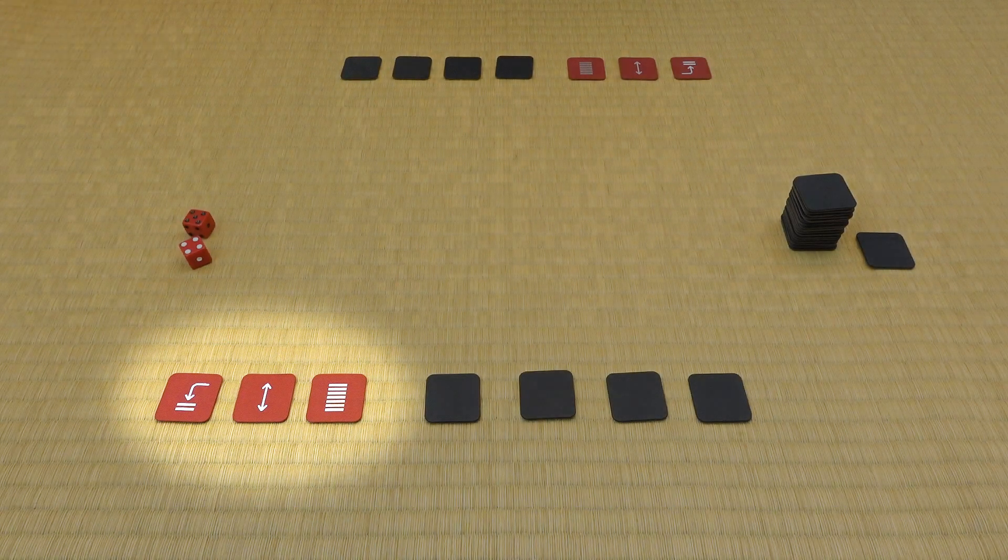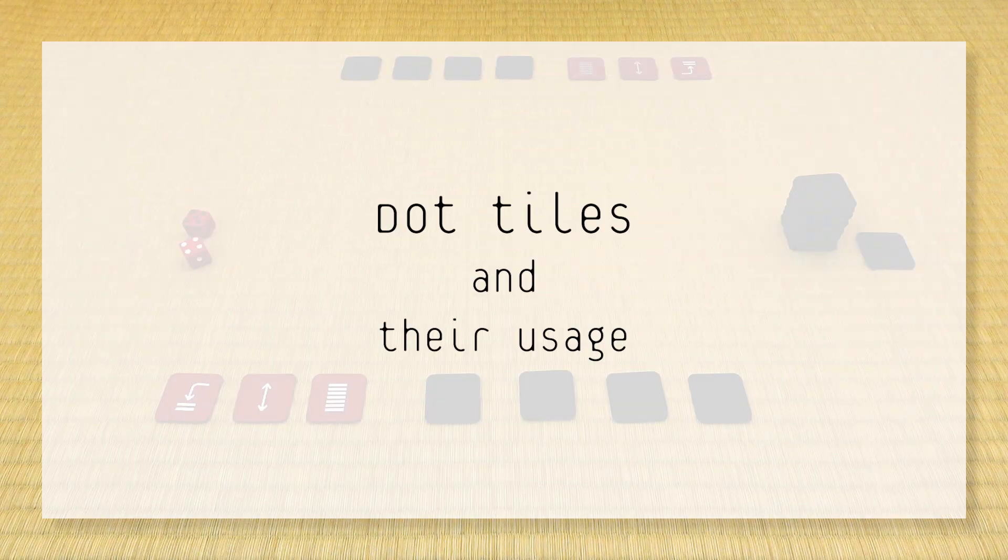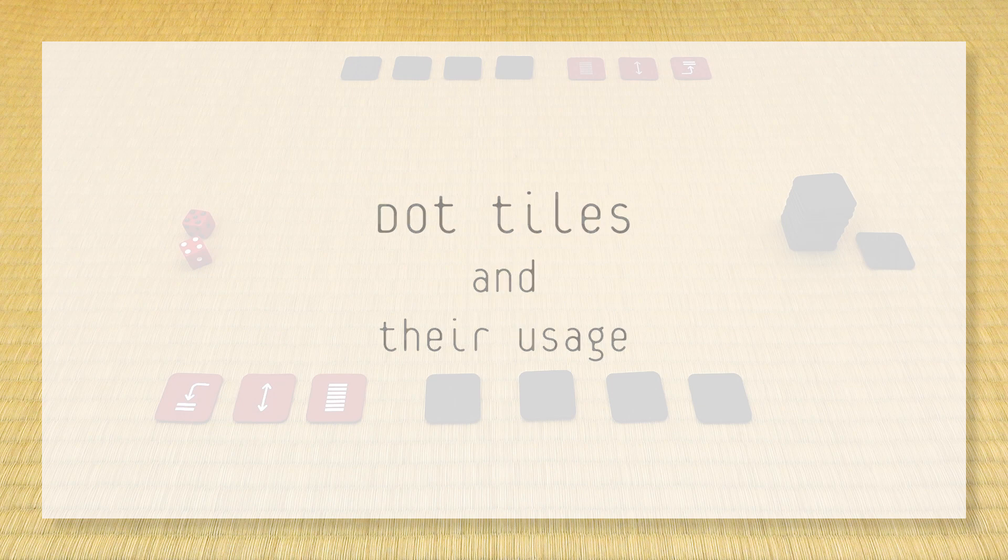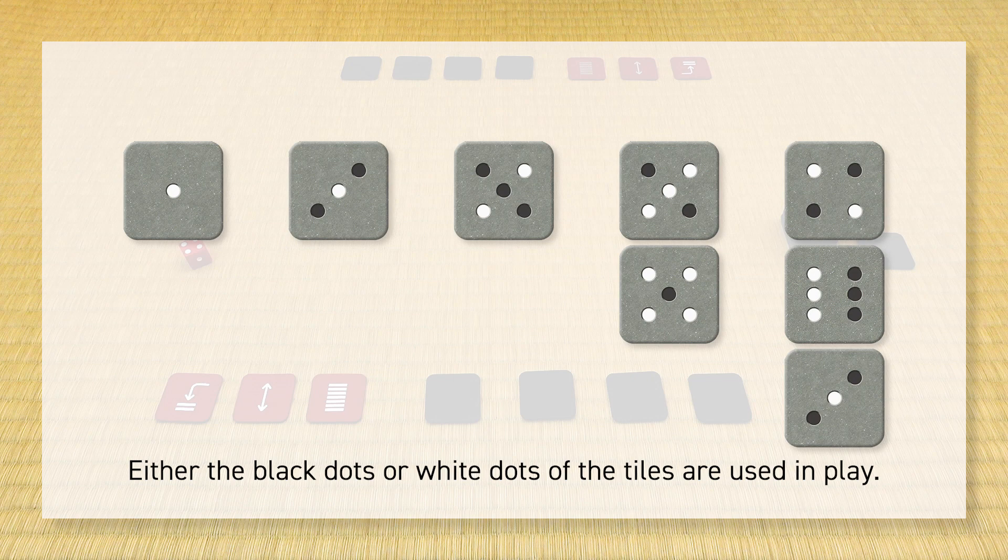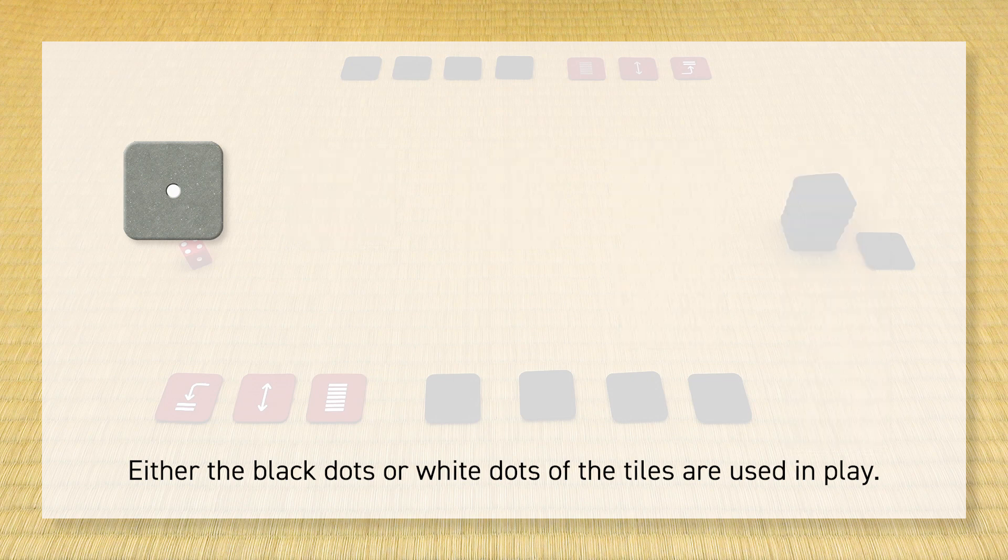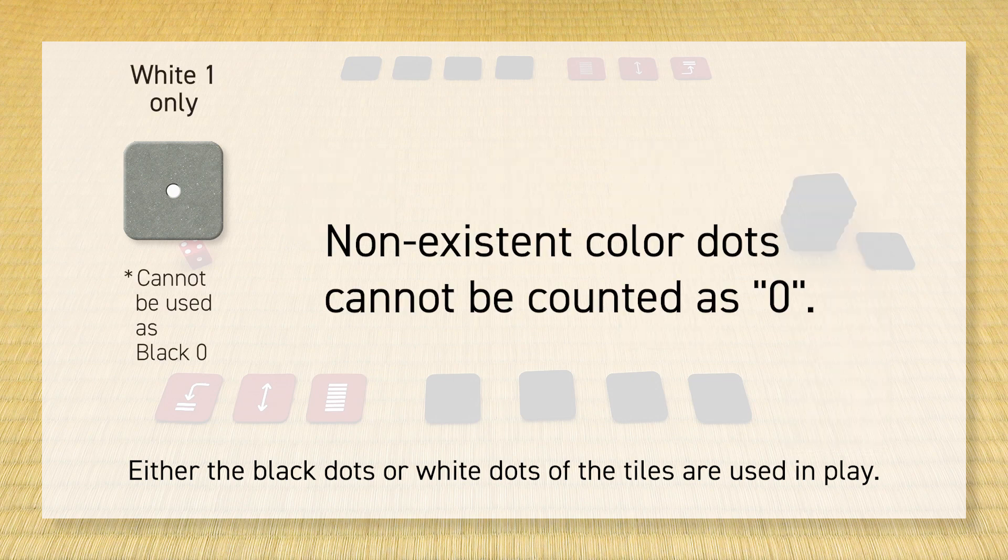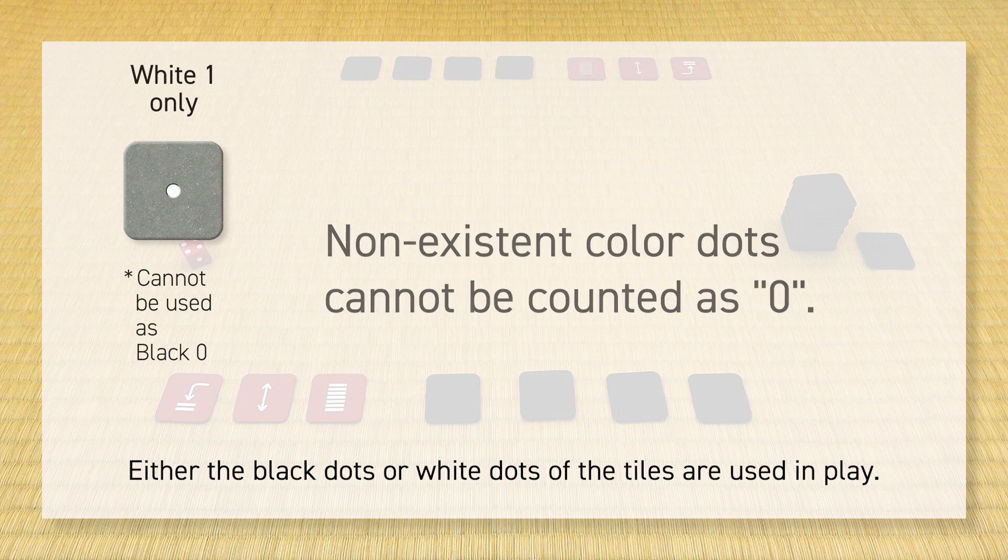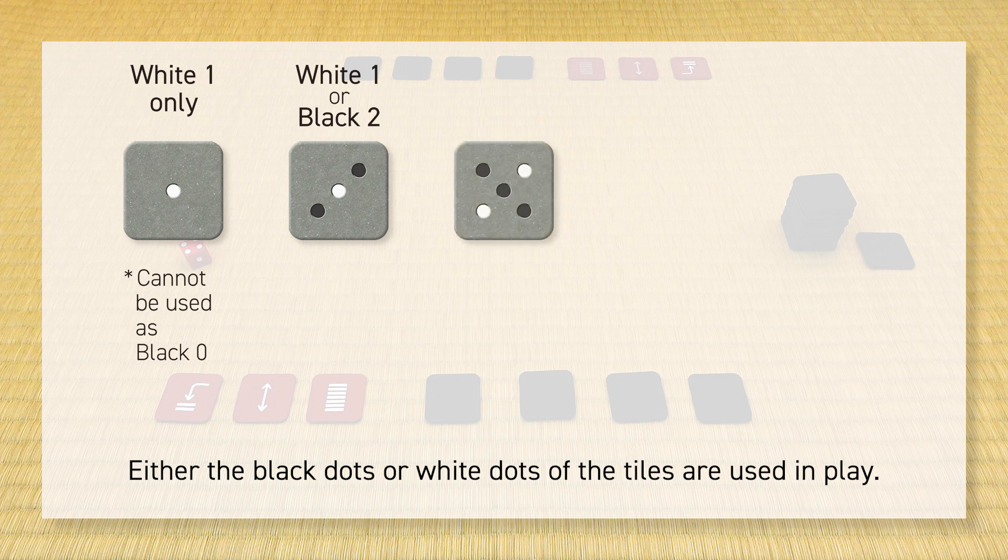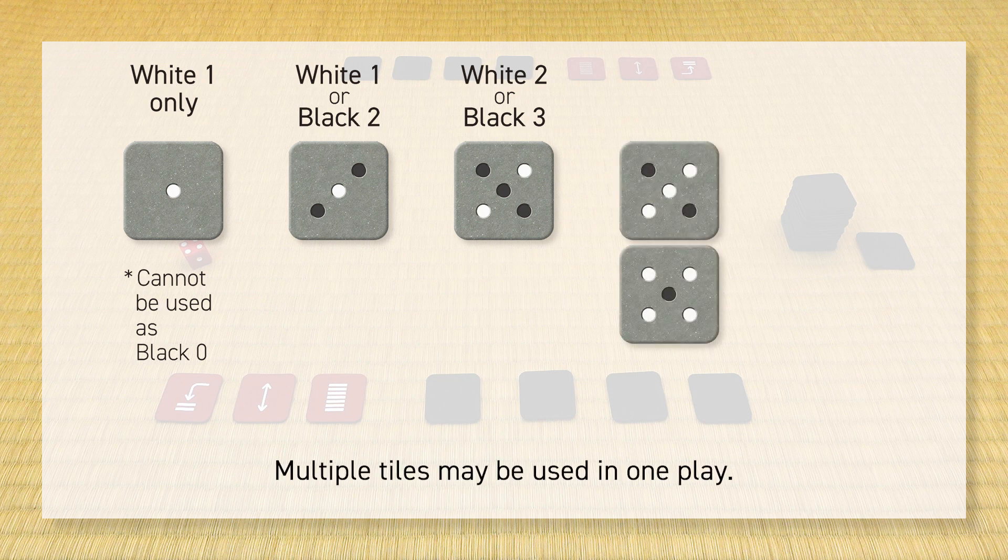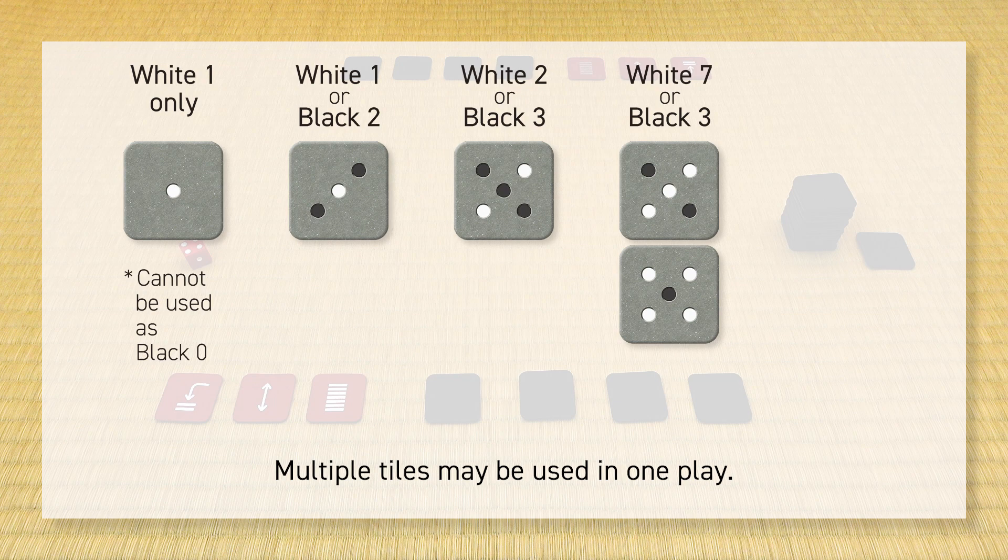Dot tiles and their usage: Either the black dots or white dots of the tiles are used in play. This tile can be used for white one only; non-existent color dots cannot be counted as zero. This is for white one or black two. This is for white two or black three. Multiple tiles may be used in one play. This combination is for white seven or black three. This combination is for white six or black seven.